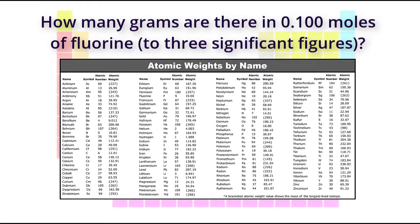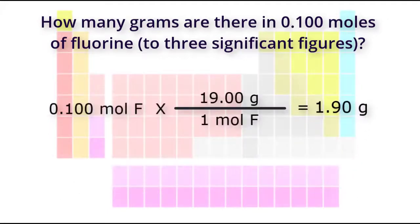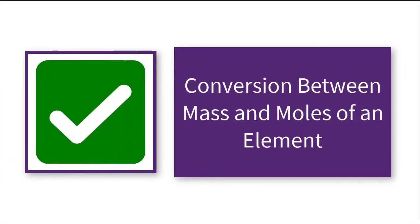Let's do one more: how many grams are there in 0.100 moles of fluorine, to three significant figures? Pause the video here and play it once you think you know the answer. There are 1.90 grams of fluorine in 0.100 moles of fluorine. You have completed this activity: conversion between mass and moles of an element.